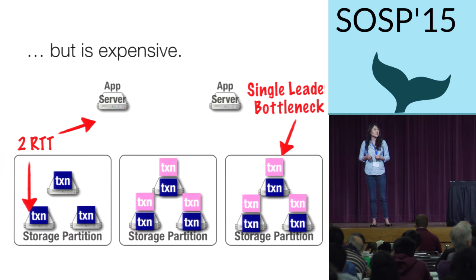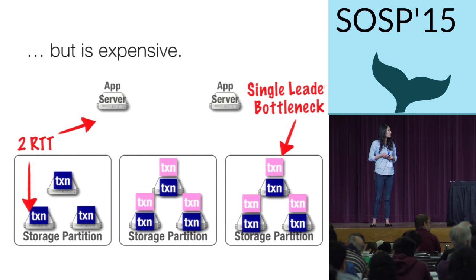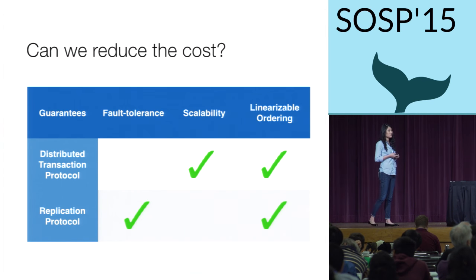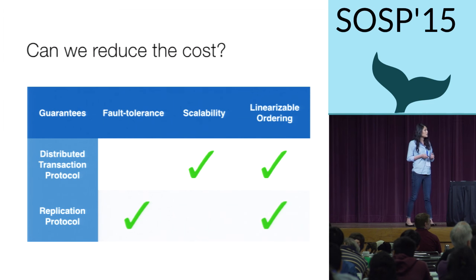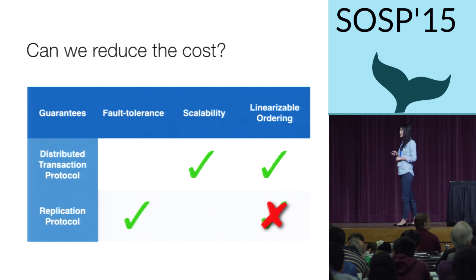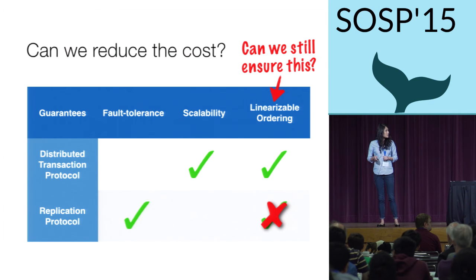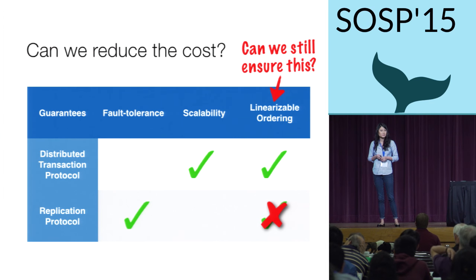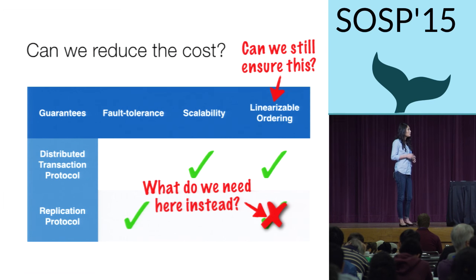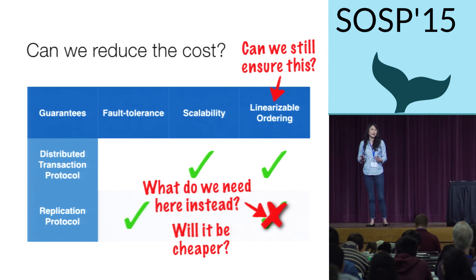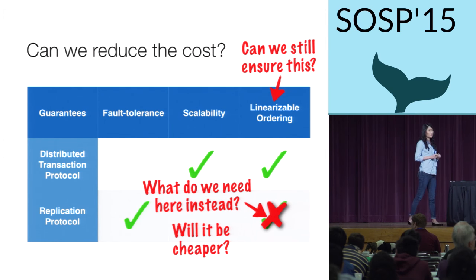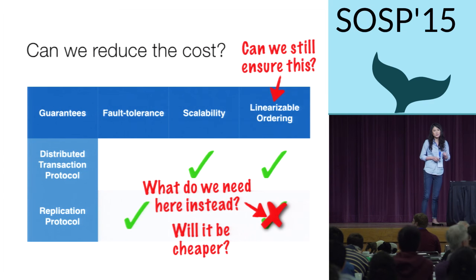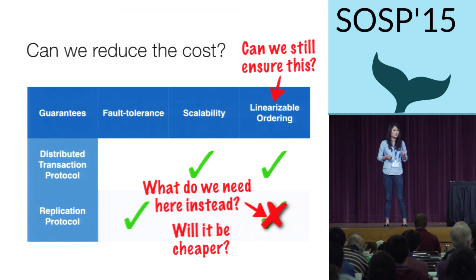We looked at this and said: this is quite expensive, with a lot of coordination going on. What can we do to make it faster? What would happen if we just eliminated consistency from the replication layer? Would we still be able to ensure a linearizable transaction ordering at the storage level? If we wanted to do that, what would we need instead from the replication layer? And would we be able to provide that as efficiently as strict ordering? In the rest of my talk, I'll explain how, with TAPIR and IR, we answer all of these questions.